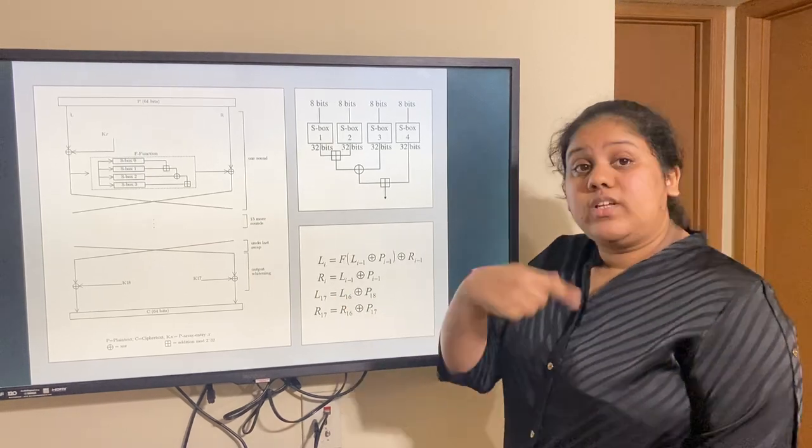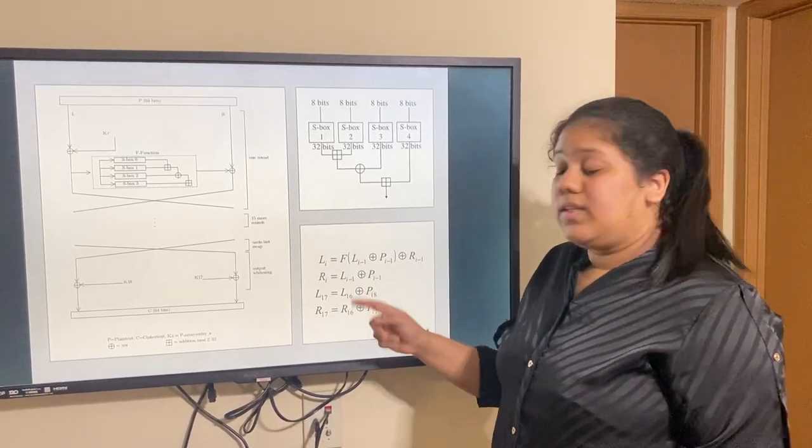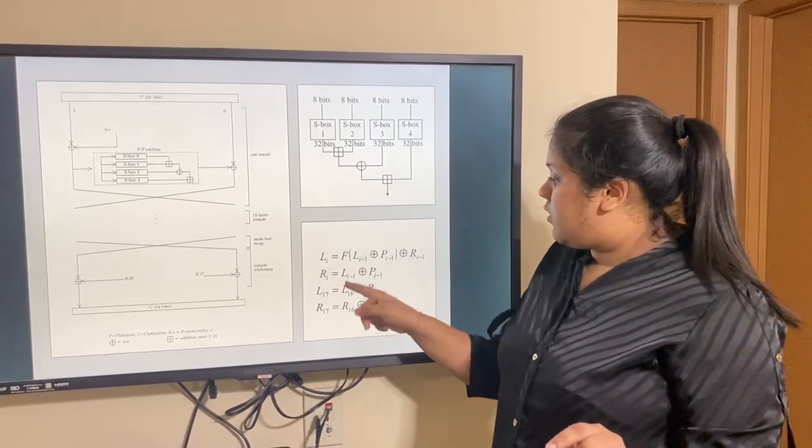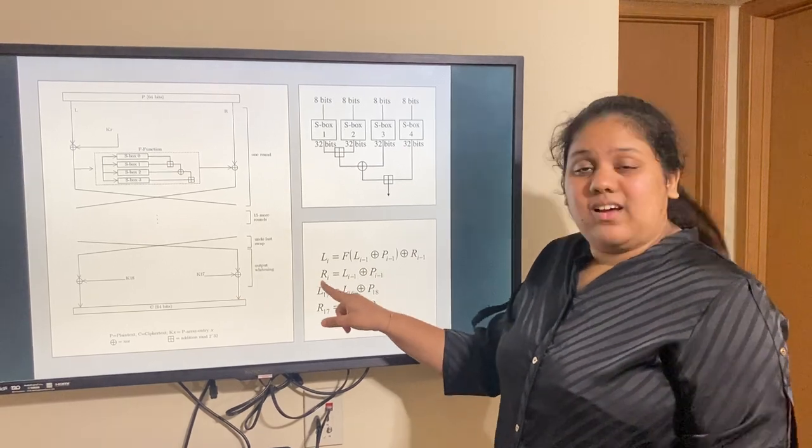So, for R, what we do is, R of the next round. That is, we XOR the value of L-1, that is the left-hand side of this round with the key. And then we get an R.